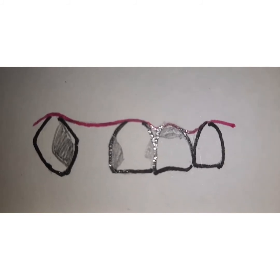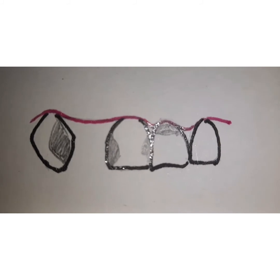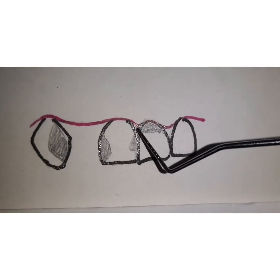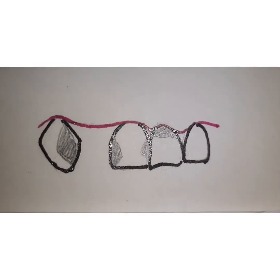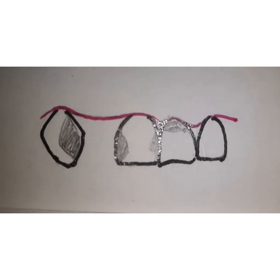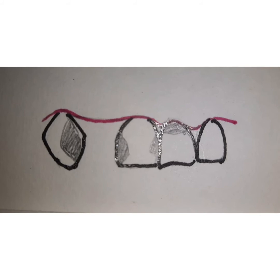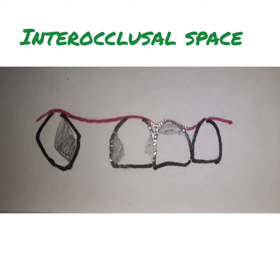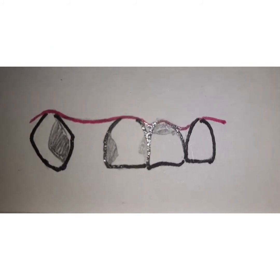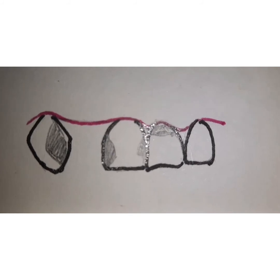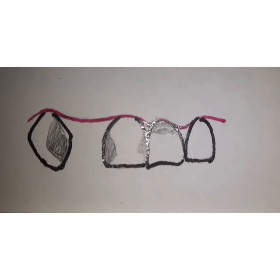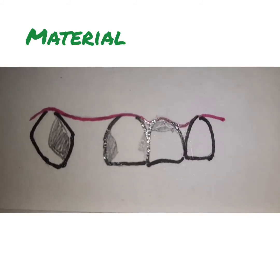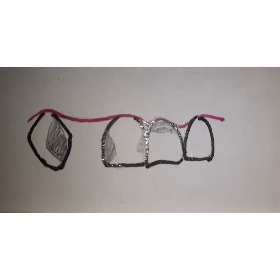If we are using extracoronal retainers, they are going to maximally alter the contour of the tooth because they cover the entire surface — the embrasure area, contact area, everything changes. With intracoronal retainers, these factors are minimally altered. Another factor is the available interocclusal space between the opposing teeth, which will also determine what type of retainer to select.